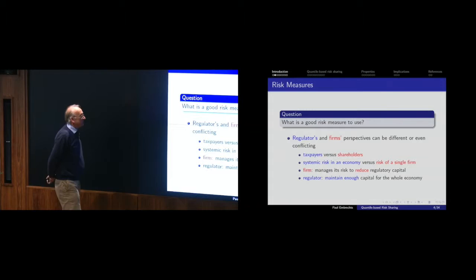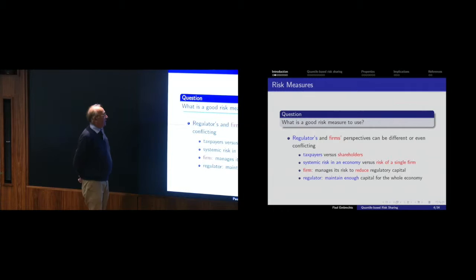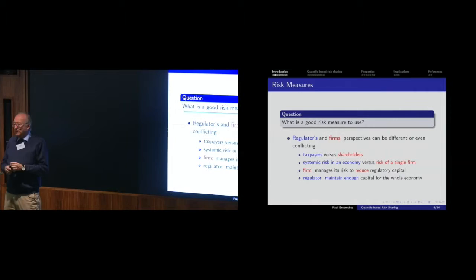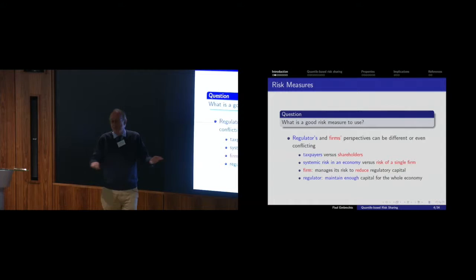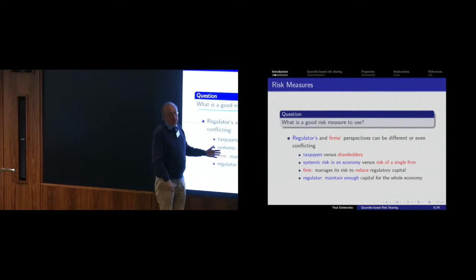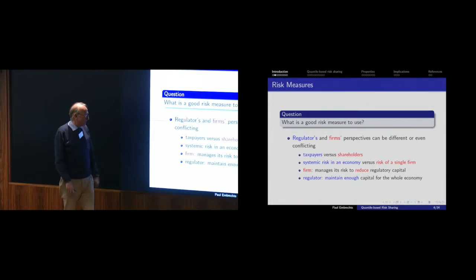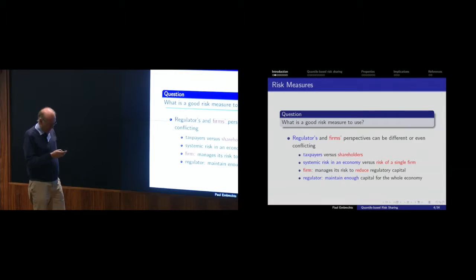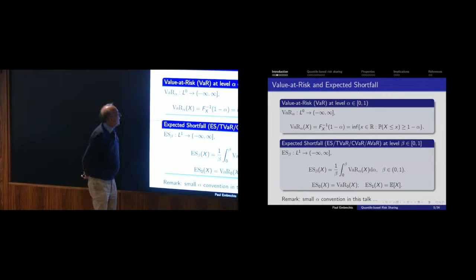The question I want to answer: what is a good risk measure? This is multifaceted. Regulators' and firms' perspectives can be different or even conflicting. You can think of a risk measure as a kind of financial dyke height against the threat of financial flooding — and if you leave out all the financial, you're back to Holland looking at dykes. You may have a taxpayer's view versus a shareholder's view, systemic risk via the risk of a single firm, or risk management used to reduce regulatory capital.